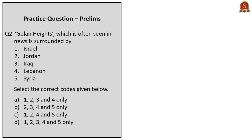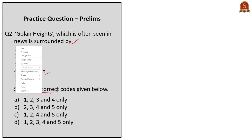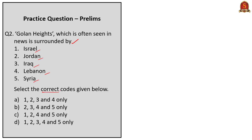The second question is: Golan Heights, which is often seen in news, is surrounded by — option 1: Israel, option 2: Jordan, option 3: Iraq, option 4: Lebanon, option 5: Syria. Select the correct answer. As we know from our discussion, Israel, Jordan, Lebanon and Syria surround Golan Heights. Hence, options 1, 2, 4 and 5 are correct — that is, option C is the correct answer.